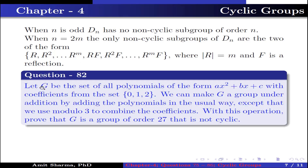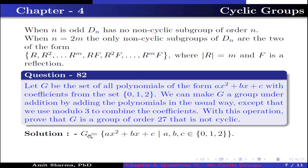Question number 82. Let G be the set of all polynomials of the form ax² + bx + c with coefficients from {0, 1, 2}. We make G a group under addition by adding polynomials in the usual way, except that we use modulo 3 to combine the coefficients. Prove that G is a group of order 27 that is not cyclic.